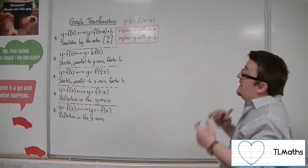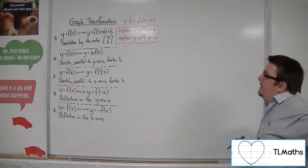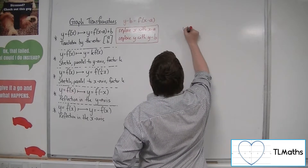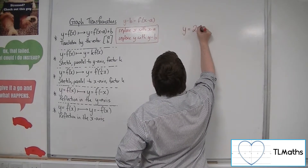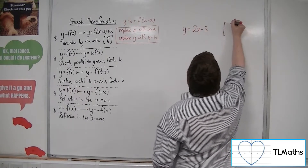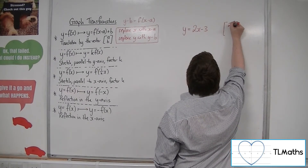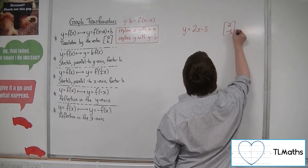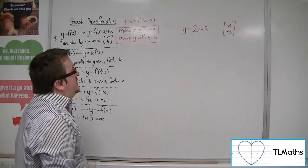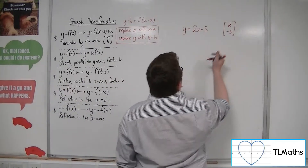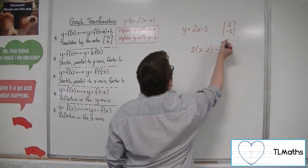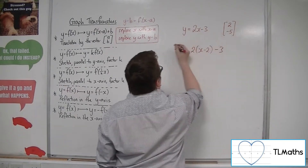Let's see an example of that. Let's say I've got a straight line equation: y equals 2x minus 3. And I'm going to translate that by the vector (2, -5). What would the new equation be? Well, the way to do that is to replace the x with x minus 2, and replace the y with y plus 5.